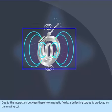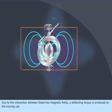Due to the interaction between these two magnetic fields, a deflecting torque is produced on the moving coil.